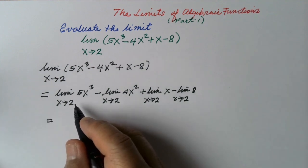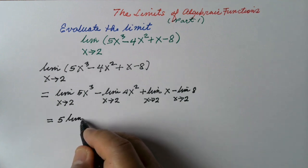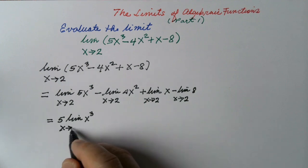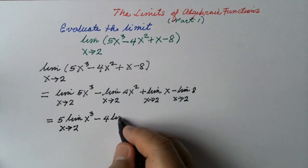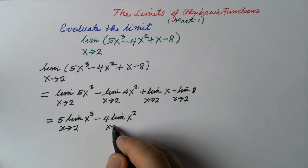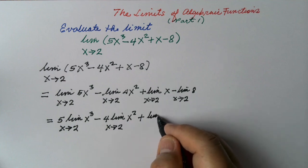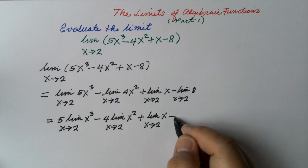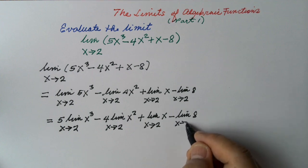Applying the Constant Coefficient Law, we have 5 times the limit of x cubed as x approaches 2, minus 4 times the limit of x squared as x approaches 2, plus the limit of x as x approaches 2, minus the limit of 8 as x approaches 2.